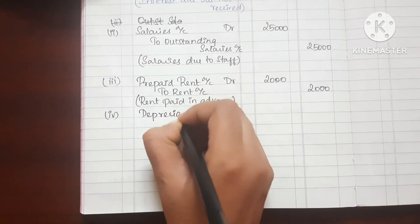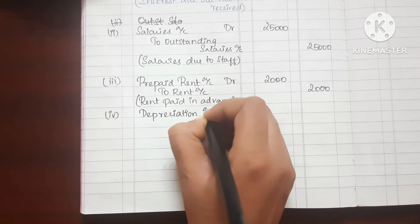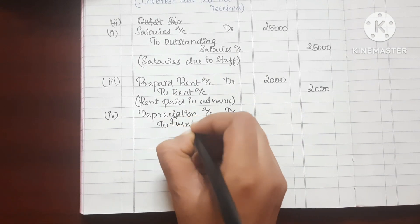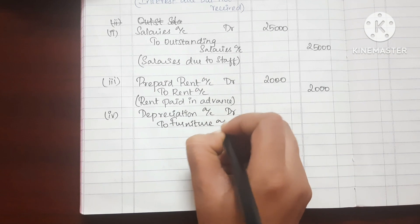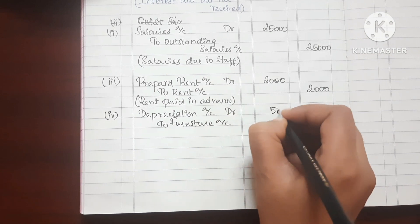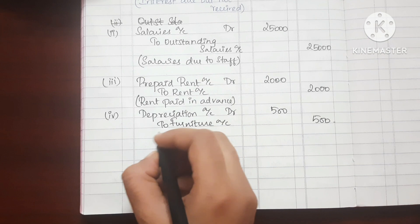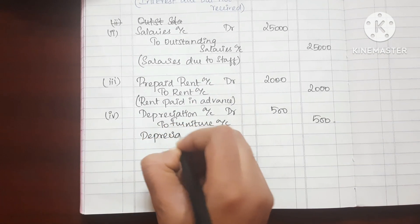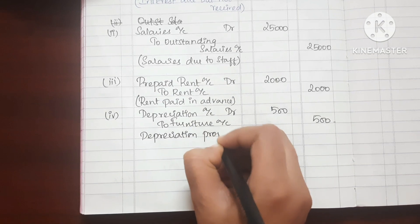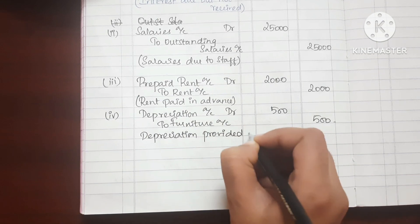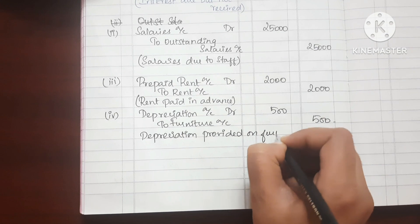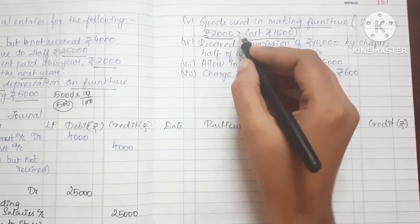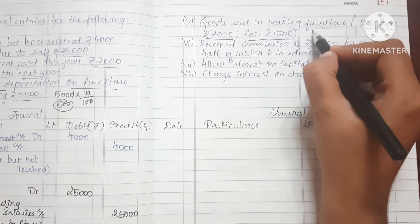Depreciation Account debit to any asset, Furniture Account, amount 500. Depreciation provided on furniture. Goods used in making furniture, selling price cost.